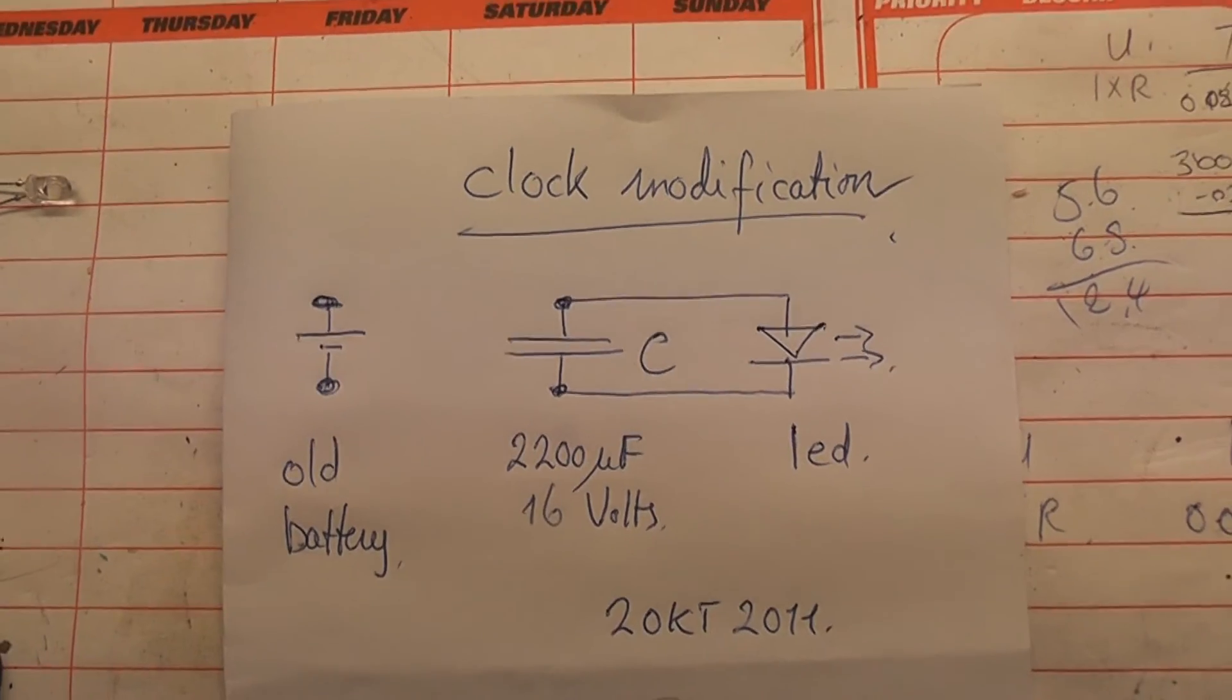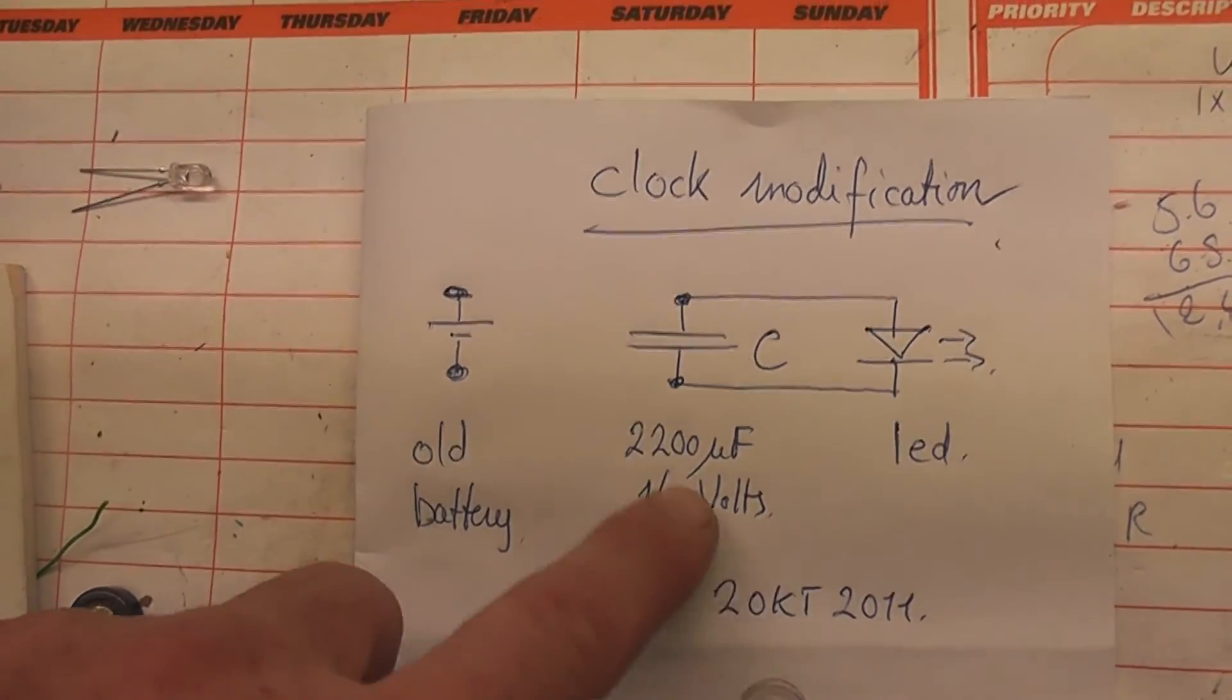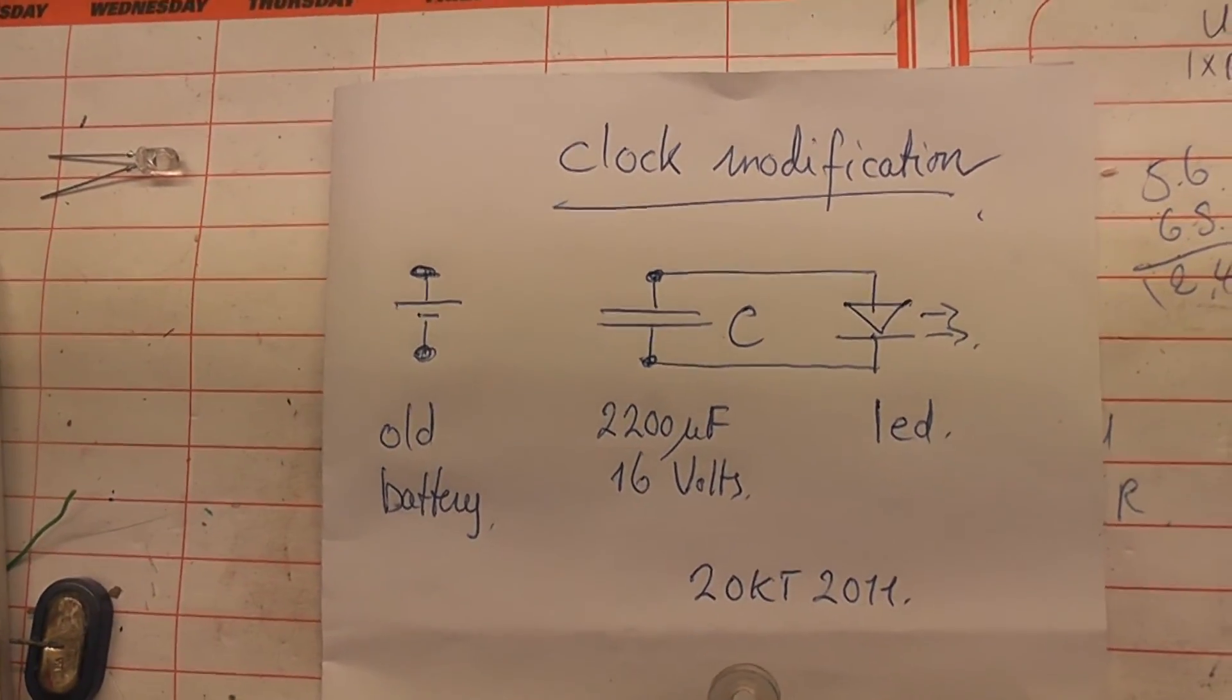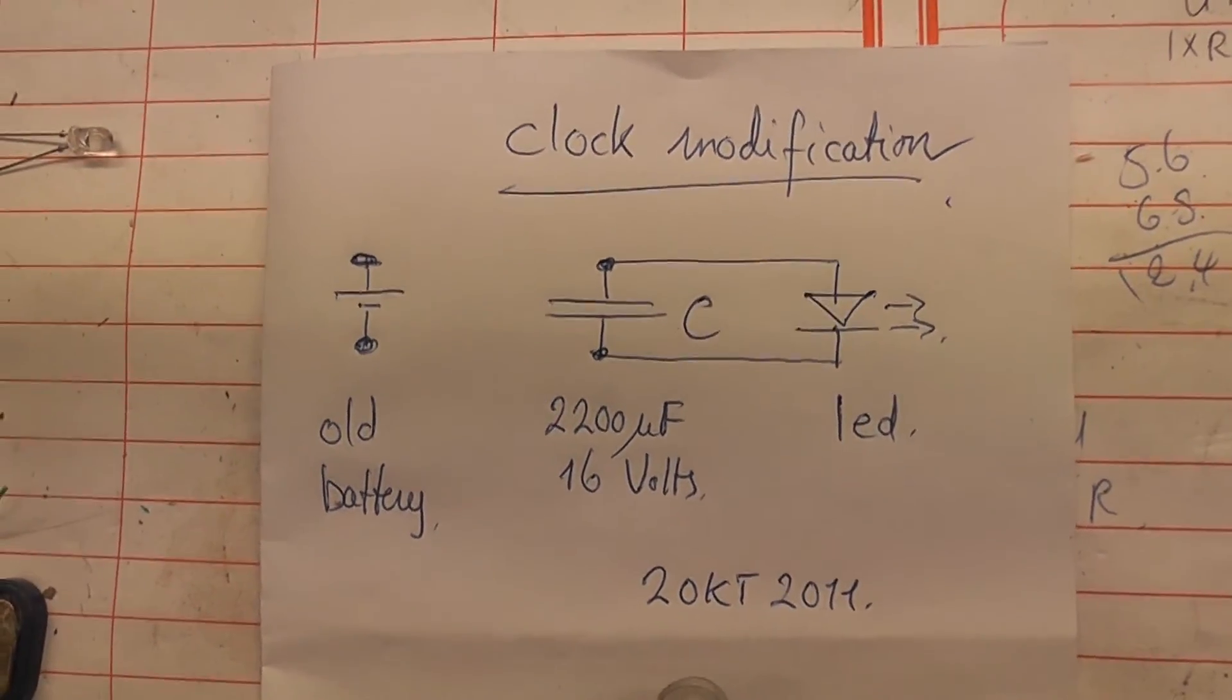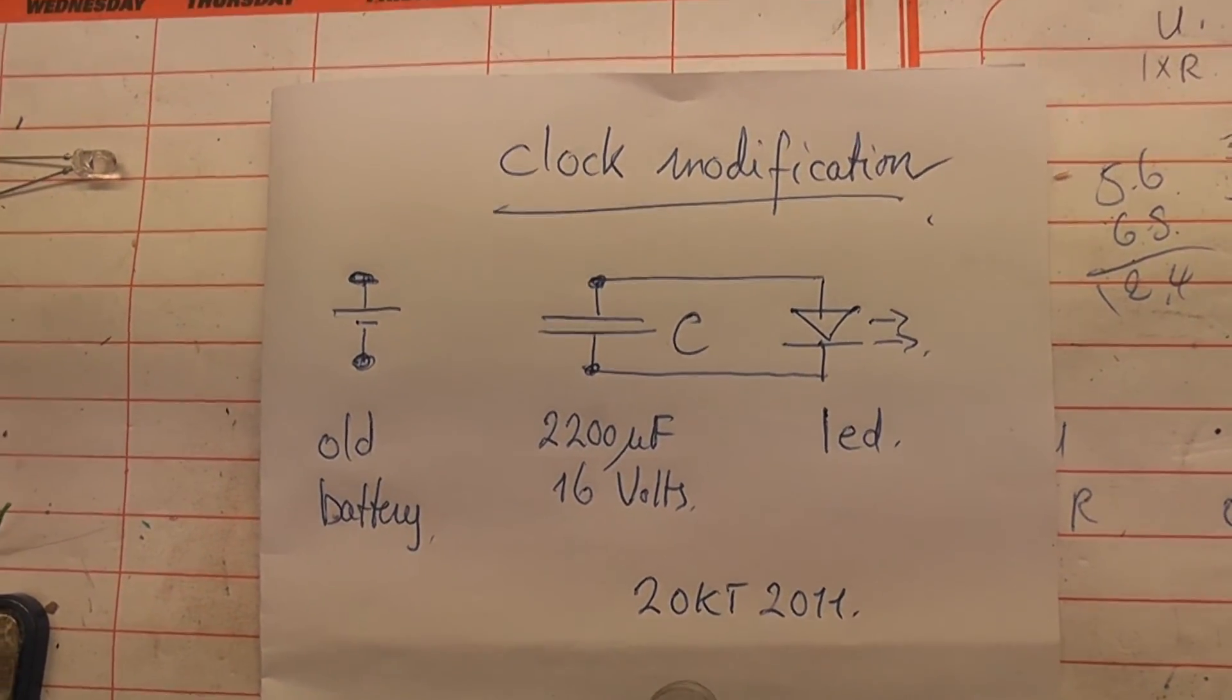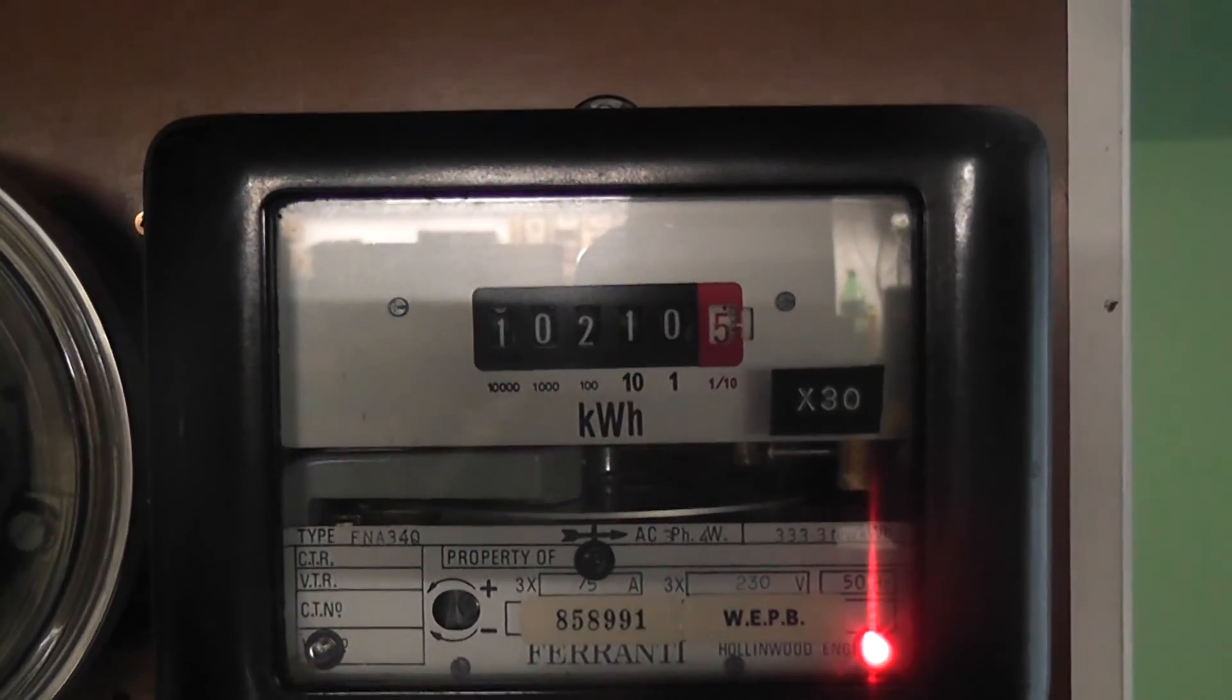Basically the circuit I did here is quite simple. Old battery replaced with a capacitor and LED in parallel. In this case it's a blue LED which is a 3 volt drop. Ideally you should use a red one which gives 1.7 volt drop which is more accurate. This meter will feature in the next video.